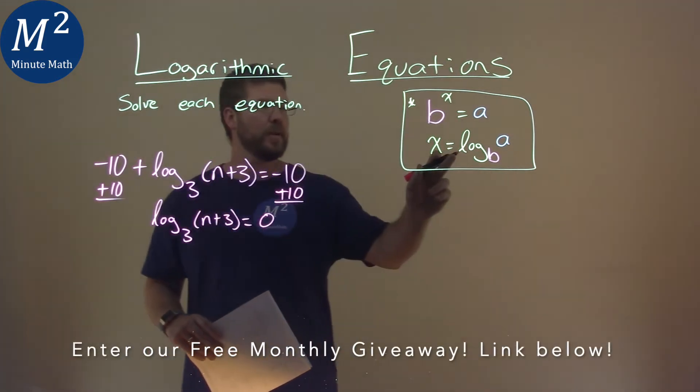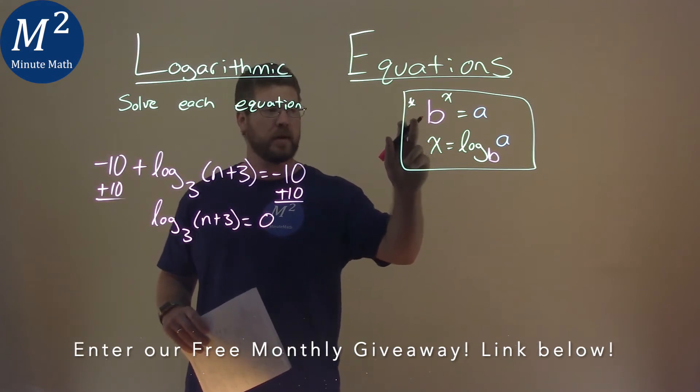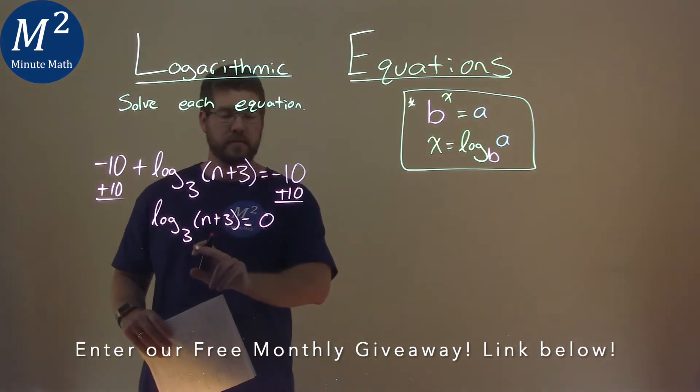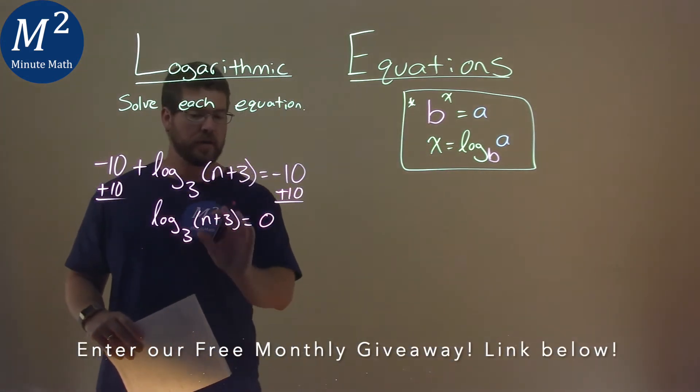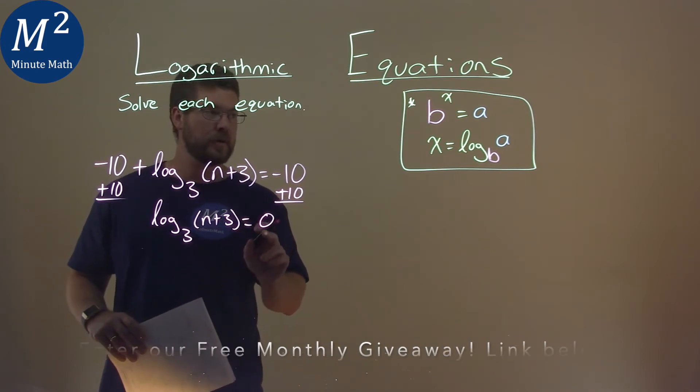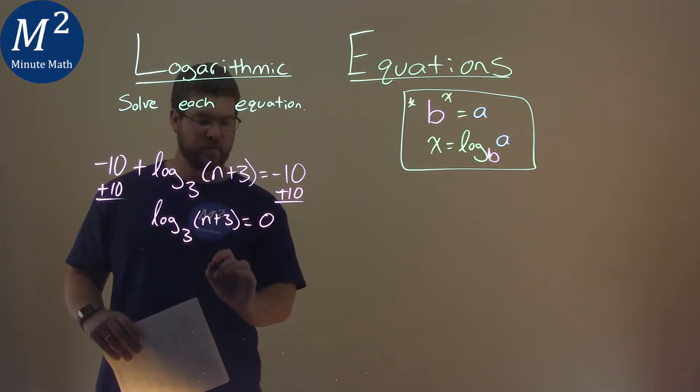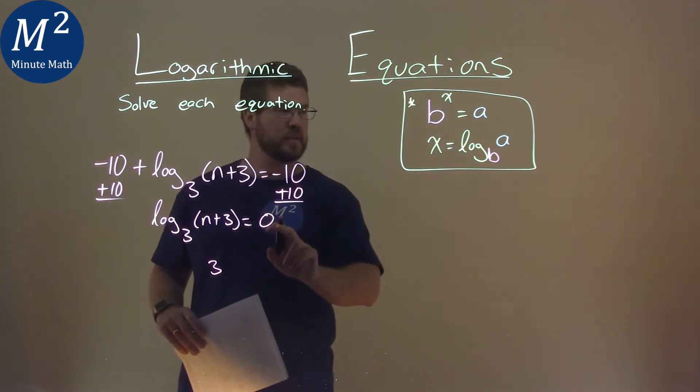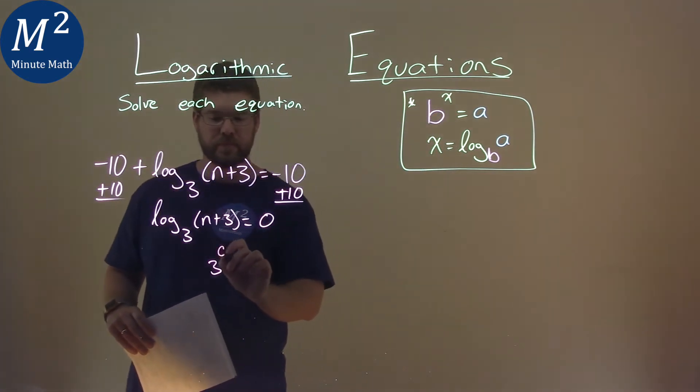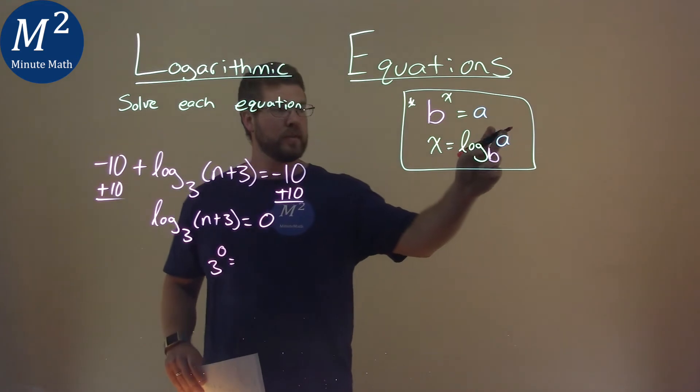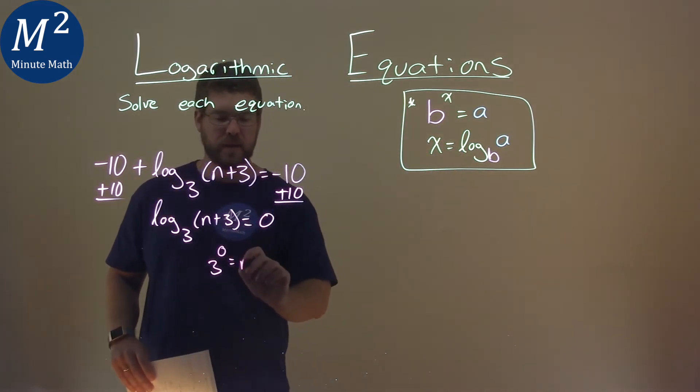From here, we can see we can use our little formula. Our base here is 3, so this log of base 3 of n plus 3 equals 0 can be written as base 3 to the x power here, which is going to be that 0, is equal to what's inside the logarithm of the a value, the n plus 3.